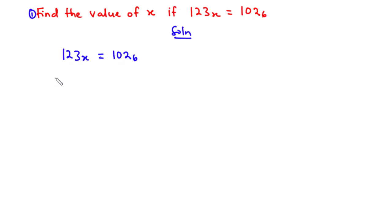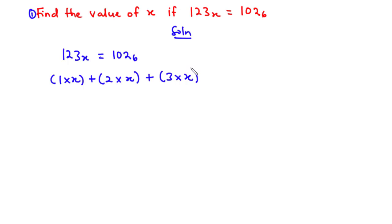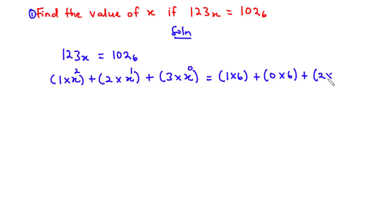To convert to base 10, we have 1 times x squared plus 2 times x to the power 1 plus 3 times x to the power 0. This is equal to 1 times 6 squared plus 0 times 6 to the power 1 plus 2 times 6 to the power 0.